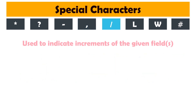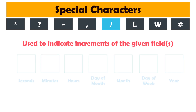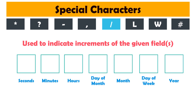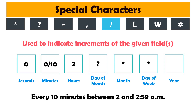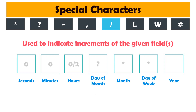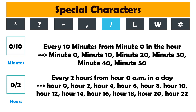Slash is used to indicate increments of the given field. If we want to run the bot every 10 minutes, starting from minute 0 in the hour, then we set the minutes field as follows: '0/10'. If we want to run the bot every 2 hours, then we set the hours field to '0/2'. The 0 at the beginning means that we want to start from minute 0, or from hour 0 if this is in the hour field.